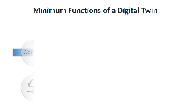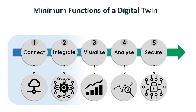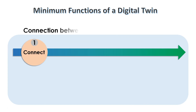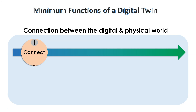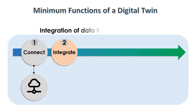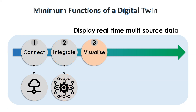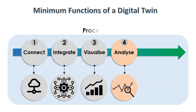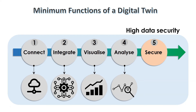According to this scenario, a Digital Twin, as a minimum, must provide the following capabilities: a live connection between the digital and physical world that allows data to flow from the physical twin to a unified virtual environment; integration of data from various sources and across sectors; the ability to display real-time multi-source data across the whole project and asset operation lifecycle; federated datasets from various sources that can be processed, modeled, analyzed and simulated to improve decision-making; and high data security.